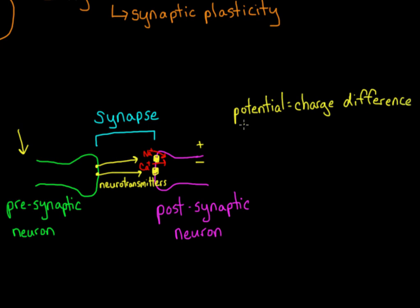The number of ions that flow into the postsynaptic neuron affect that difference. And this is actually how we measure the strength of the synapse, by how much the postsynaptic neuron's potential changes as a result of presynaptic stimulation.